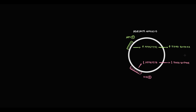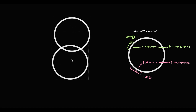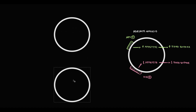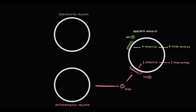The function of the arcuate nucleus is controlled by two groups of neurons, divided based on their effect on appetite. Orexigenic neurons stimulate appetite, and anorexigenic neurons cause a decrease in appetite. Anorexigenic neurons produce melanocyte-stimulating hormone, which stimulates the MC receptor and by this mechanism decreases appetite.